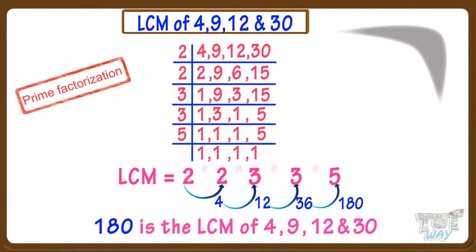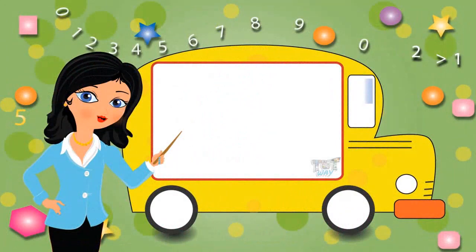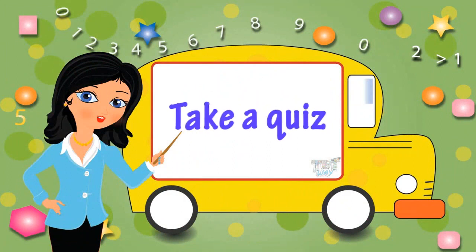The LCM of 4, 9, 12, and 30 is 180. So kids, this method is easier and shorter to find LCM when you have more numbers or bigger numbers. You may go ahead and take a quiz to learn more. Bye-bye!